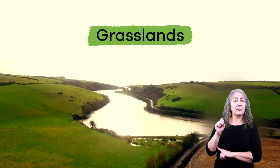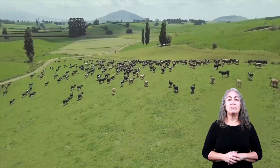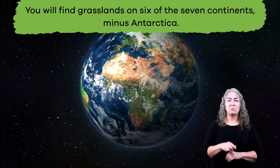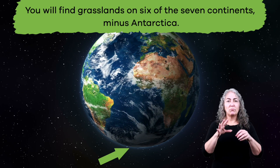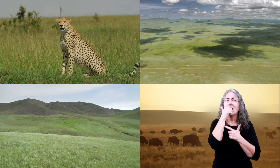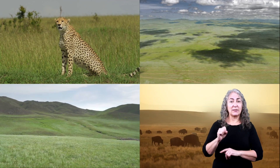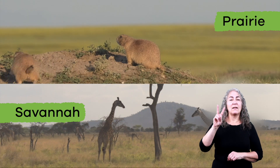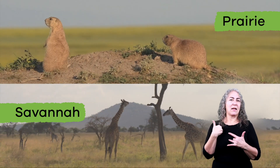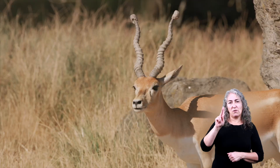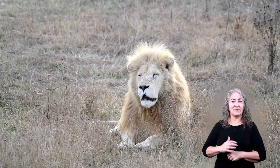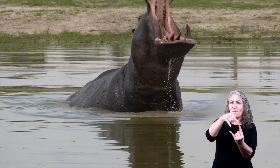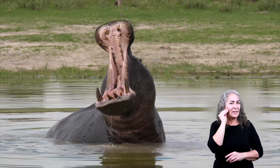First up are grasslands. A grassland is full of tall, growing grass and does not have a lot of trees. You will find grasslands on six of the seven continents, minus Antarctica. There are different types of grasslands — prairies and savannas are two of these different kinds. Animals like aardvarks, antelope, brown bears, squirrels, lions, and hippos can all live in this kind of habitat.